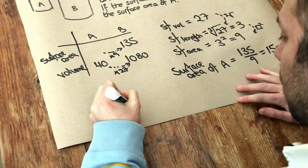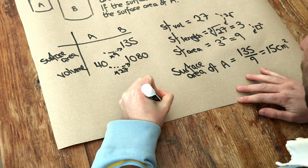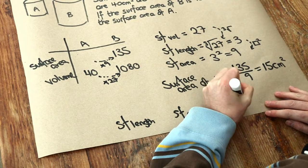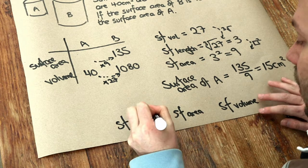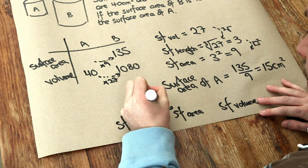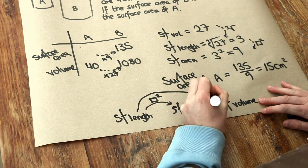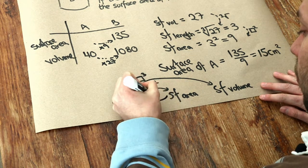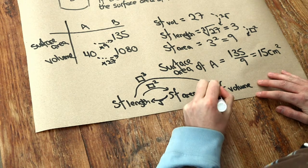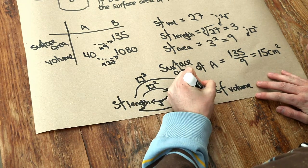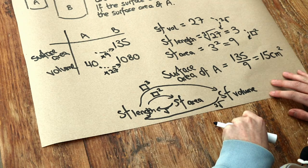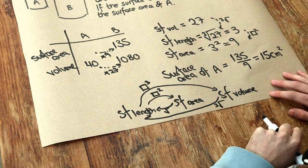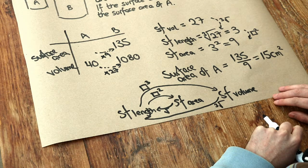So just to summarize: if you've got the scale factor of length, scale factor of area such as surface area, and the scale factor of volume — to go from length to area we square the scale factor; to go from length to volume we cube the scale factor; to go back from the scale factor of area to length we square root; and to go back from the scale factor of volume to length we cube root. And that also means if we want to go from the scale factor of volume to the scale factor of surface area, we can cube root first and then square to get the scale factor of surface area.